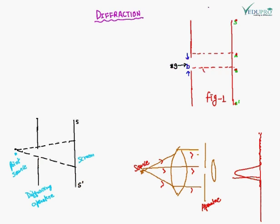The intensity distribution on the screen is known as the diffraction pattern. In light waves, the bending is small due to the shorter wavelength — of the order of 10 to the power minus 5 centimeters — while for sound waves the diffraction is very large as its wavelength is much higher.